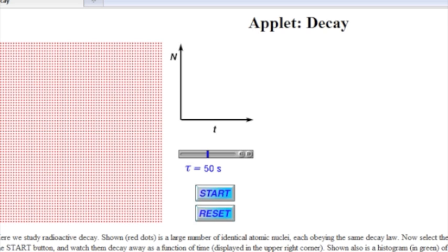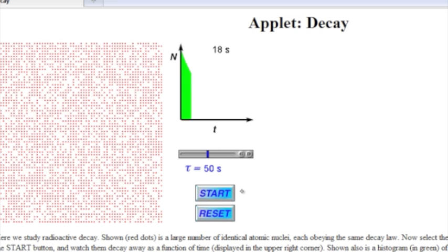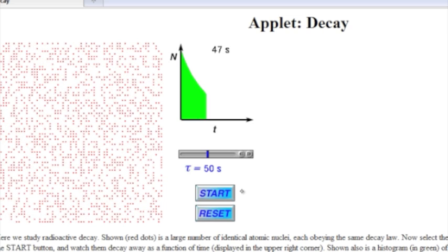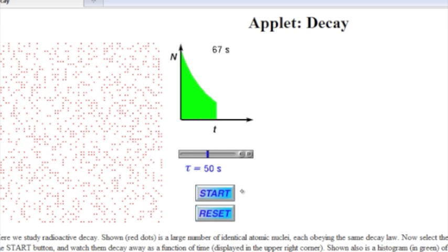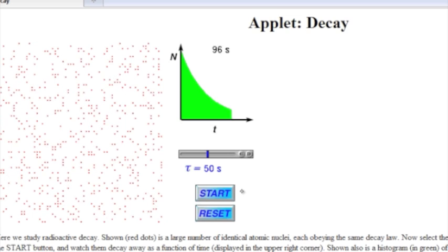Let me show you a little animation showing what we mean by half-life, or rate of radioactive decay. Here, the red dots show a large number of identical atomic nuclei that all obey the same decay law. And so, let's just start this to show how these radionuclei undergo radioactive decay. I've started it, and you can see, as the red dots disappear, it's indicating that those particular atoms have undergone radioactive decay.